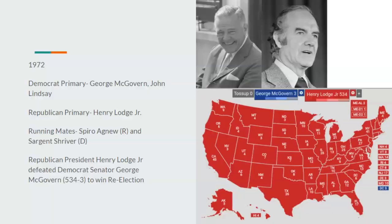In 1972, Henry Cabot Lodge Jr. does essentially what Nixon does in his first term in our timeline, except there's no Watergate. In the Democrat primary, there's George McGovern and John Lindsay. McGovern is essentially a one-man wrecking show because Lindsay's not that strong a candidate. He chooses Sargent Shriver for his running mate. There's higher Republican turnout than Democrat turnout because not a lot of people want a far-left candidate — Lodge would throw around the words 'liberal' and 'socialist,' which were dirty words back in the day.